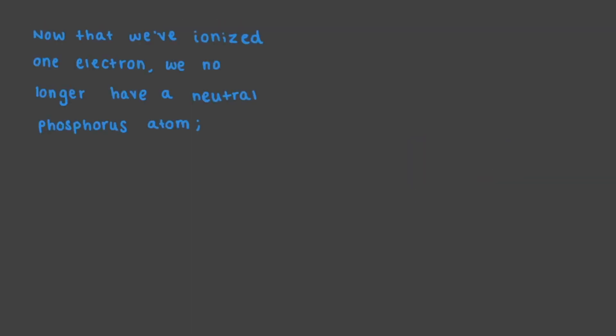Now that we have ionized one electron, we no longer have a neutral phosphorus atom. Instead, we are left with a phosphorus cation, P plus, since one of its electrons has been removed. That being said, there are still 14 electrons remaining in this P plus ion, and each of them can also be ionized given the right amount of energy.